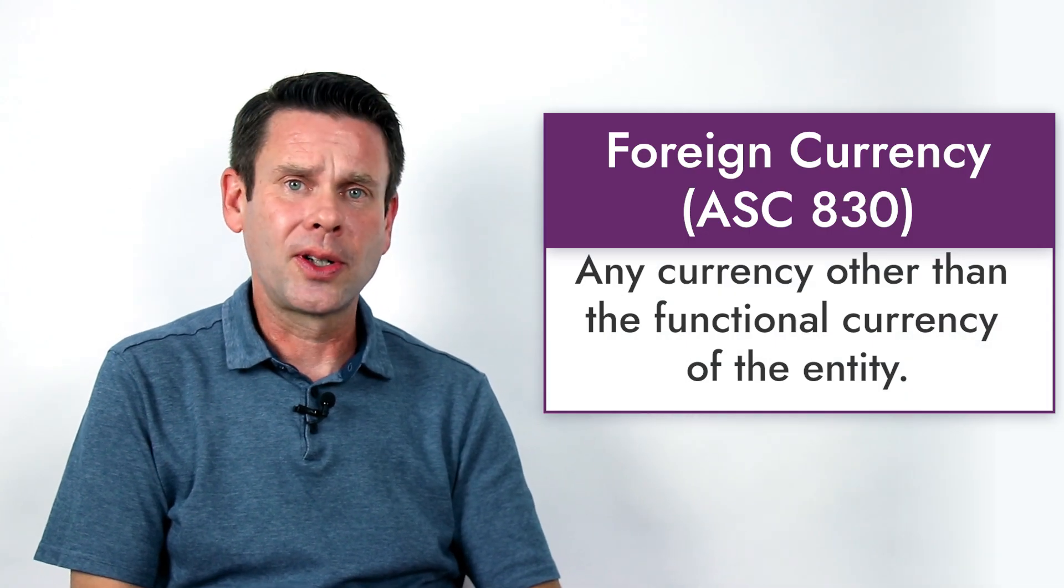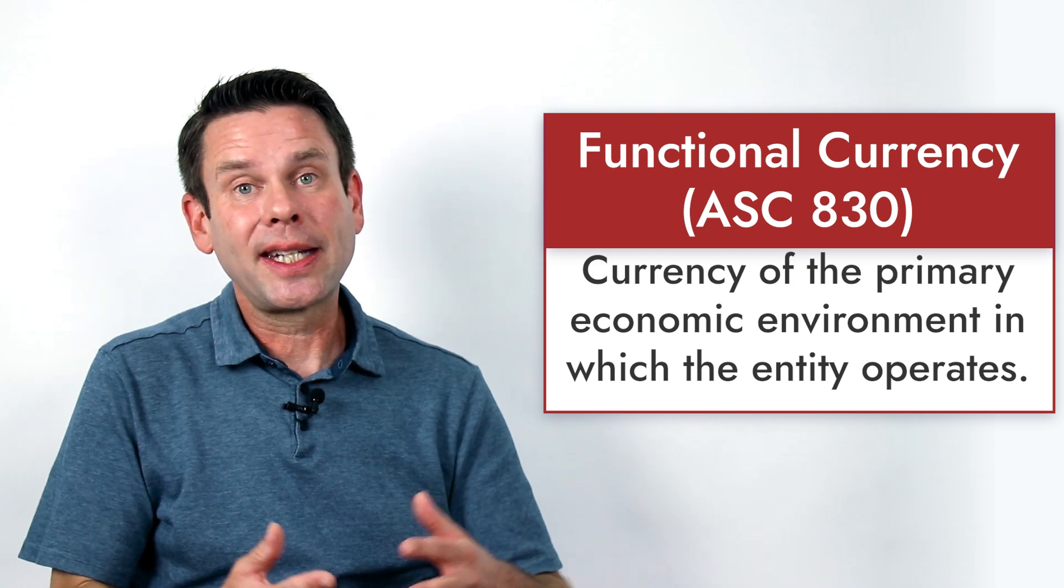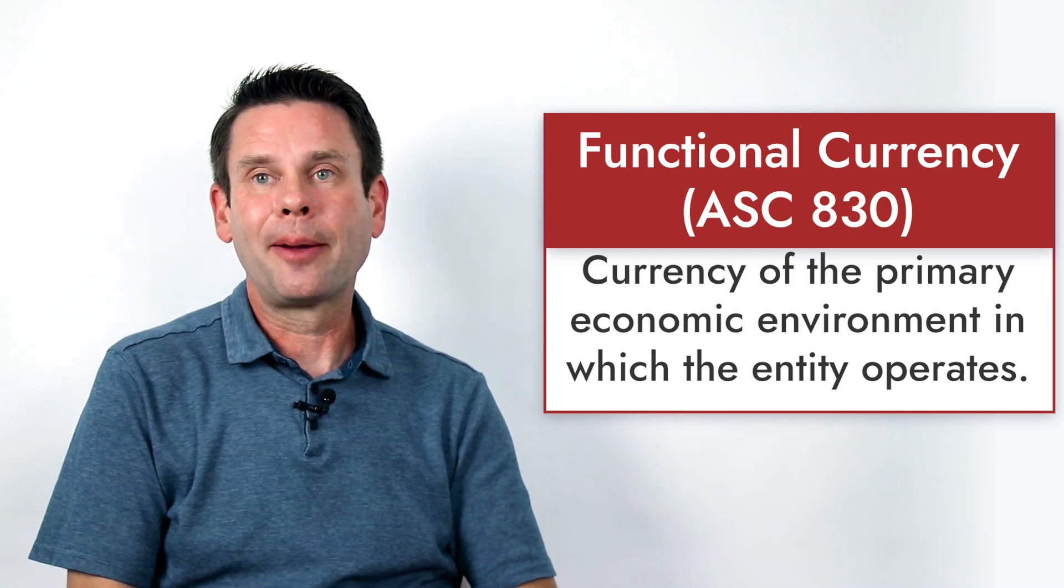First, foreign currency. This is any currency other than the functional currency of the entity. Functional currency is really the key to the accounting under ASC Topic 830.